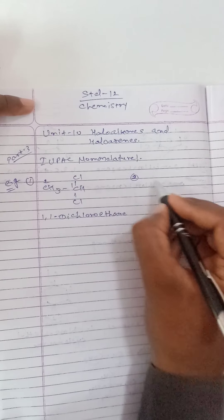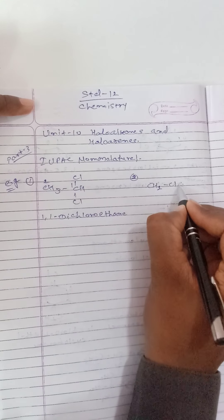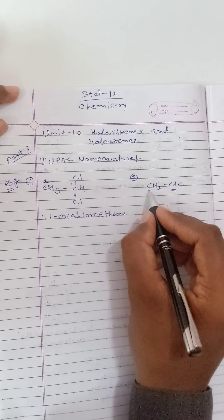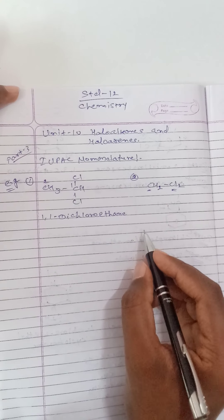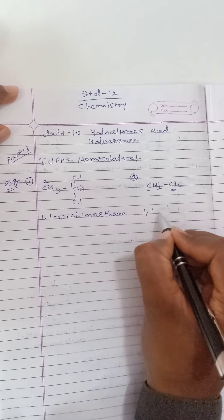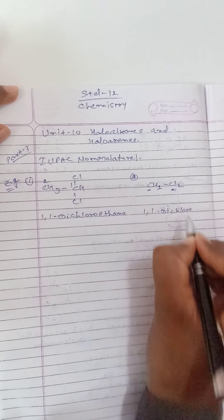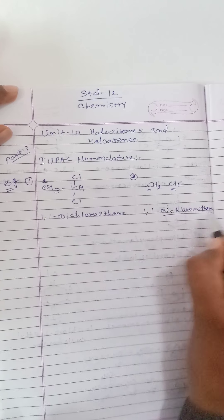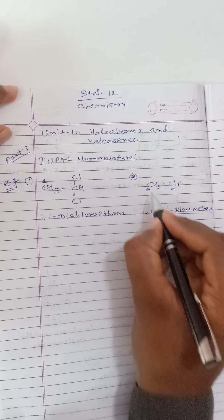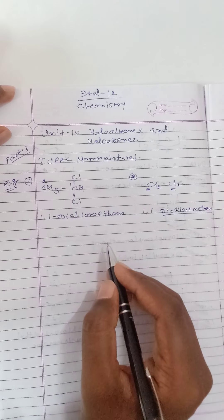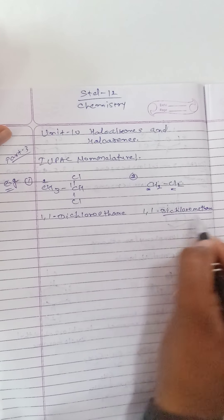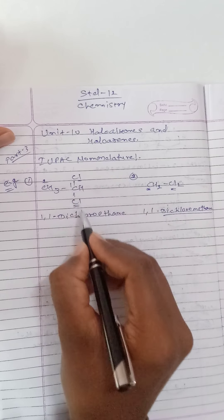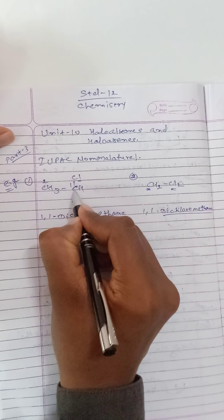Next example: CH2Cl2. Here two chlorine atoms are directly attached to only one carbon, so we write 1,1-dichloro — or you can directly write dichloromethane, because here only one carbon is present. So it is called dichloromethane.